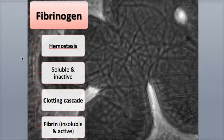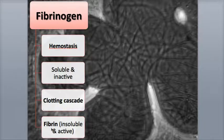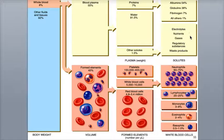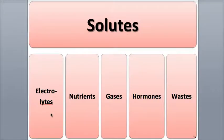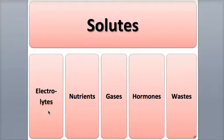Fibrinogen makes up 7% of the plasma proteins and has an important role in the blood clotting reactions called the clotting cascade. The reduction and prevention of blood loss is called hemostasis. Fibrinogen is the soluble, inactive form of the protein, while fibrin is the insoluble and active form that helps directly form the blood clot. The other solutes in the plasma, accounting for 1 to 1.5%, include the electrolytes, which are inorganic salts critical to cell function, such as sodium, potassium, calcium, and magnesium ions, as well as chlorine, hydrogen phosphate, sulfate, and bicarbonate ions.